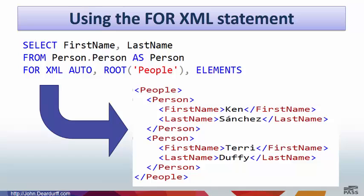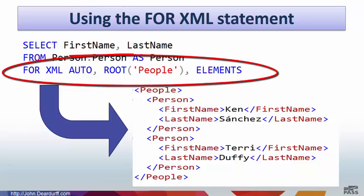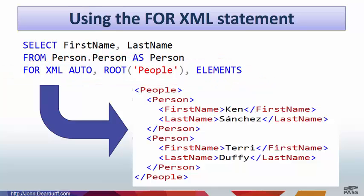Now, another way of using XML within SQL is, after I write a SQL statement, I may want to show it in XML format, and I can do that by using the FOR XML statement. There are actually four different ways of doing a FOR XML: FOR XML RAW, FOR XML AUTO, FOR XML EXPLICIT, and FOR XML PATH. For this tutorial, we're just going to stick with FOR XML RAW and FOR XML AUTO.